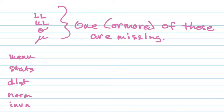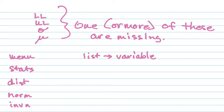Pull out your calculators and get to that point. Once you're there, the default is list — you do not want list. You need to change it to variable. That's the next key you'll hit — change it to variable. It's one of the buttons on the bottom, the F2 key.